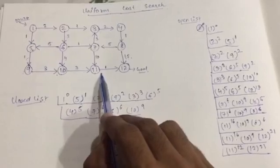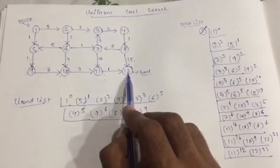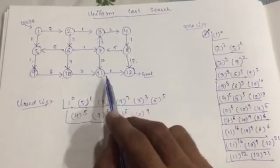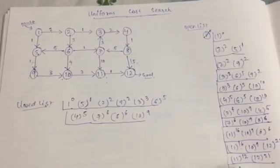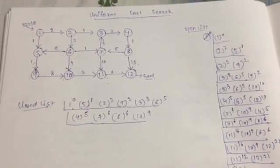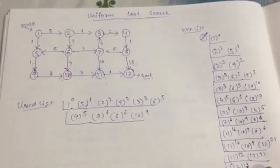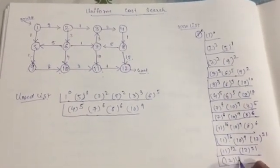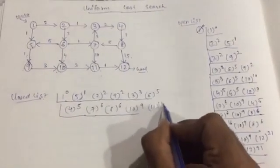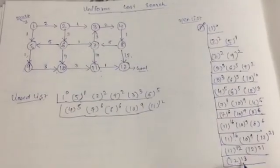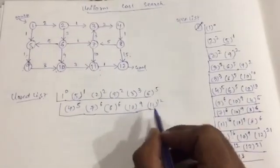From node 11 you can move towards node 12, so this will be 13. You have to write the minimum value — from 21 and 13, which one is minimum? 13 is minimum. Include this in the closed list, and finally you got the final answer as 13.